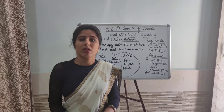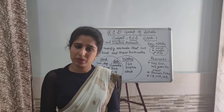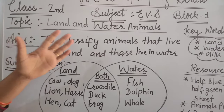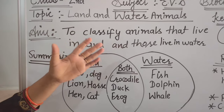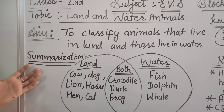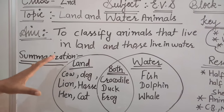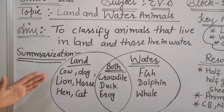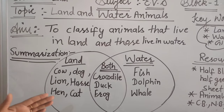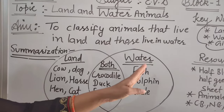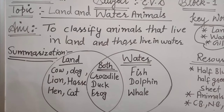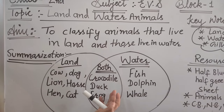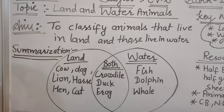What have we learned in today's class? Our aim was to classify animals that live on land and those that live in water. Summarization: some animals live on land — cow, dog, lion, horse, hen, and cat. Some animals live in water — fish, dolphin, and whale. And some animals can live on both land and water — crocodile, duck, and frog.